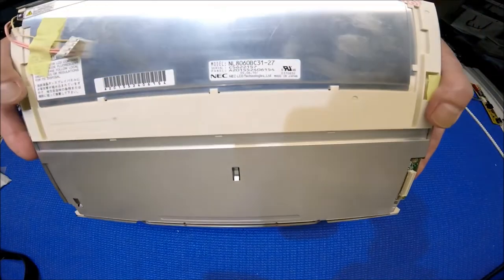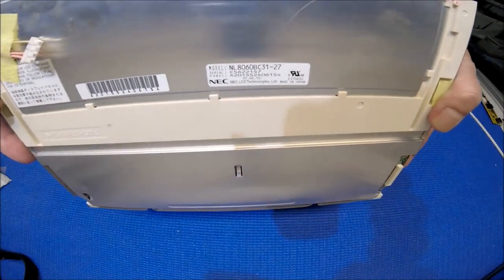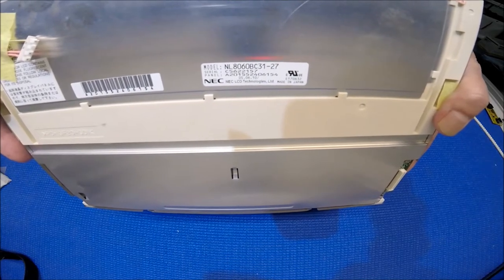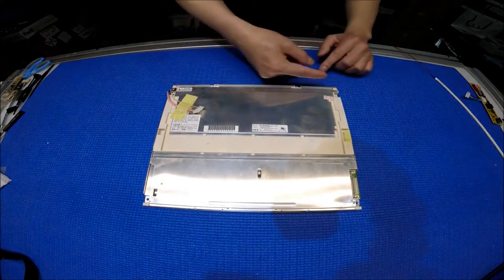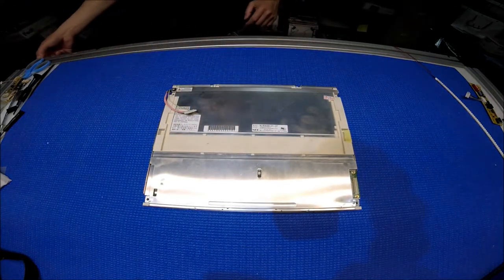So this screen is actually made by NEC. The screen number is NL8060BC-31-27. It's a 12.1 inch screen which has dual-ear mount on one side. To upgrade, it's very simple.